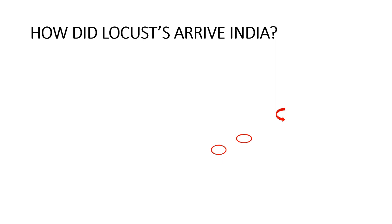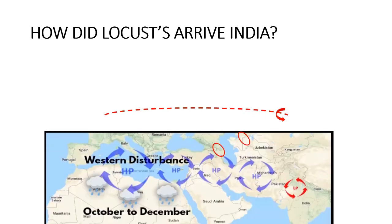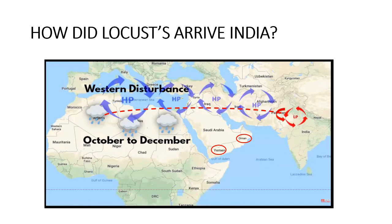Now the question is: how do they arrive in India? It is believed these insects originated in Africa, especially the northern part of the African desert. Here you can see on the world map this is the northern part of Africa — this is the desert portion. The breeding place requires warm temperature and rainfall. During the period of October to December, there is frequent rainfall in this desert area, along with warm temperature — making it the breeding area at this time.